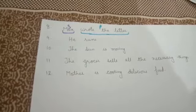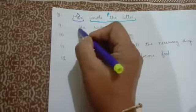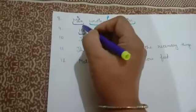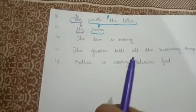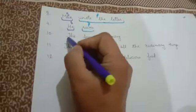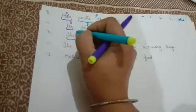Next, a very short sentence: 'He runs.' Here 'he' is the subject and 'runs' is the predicate. Next: 'The sun is moving.' Here the main noun is sun, so it is the subject, and the other part is the predicate.